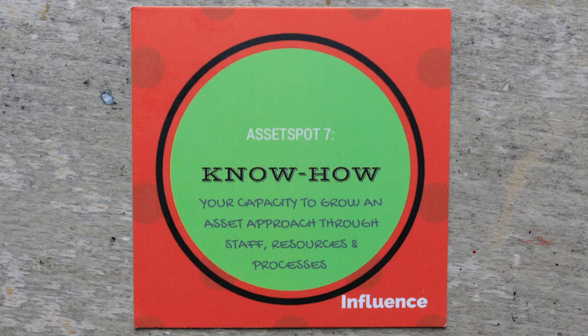The final asset spots focus more on influence. Asset Spot number seven is Know-how — the actual know-how within an organisation to operate and embed an asset-based approach. That applies to how an organisation recruits its staff, manages its programme, develops its funding, and looks at its own risks in a more positive way.